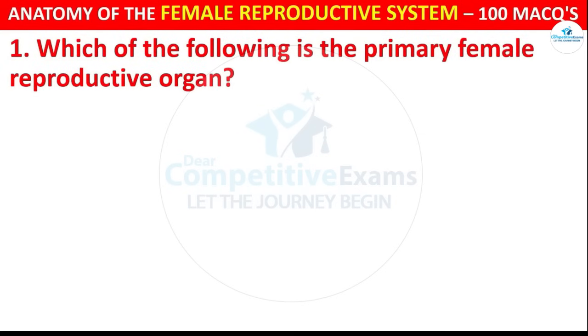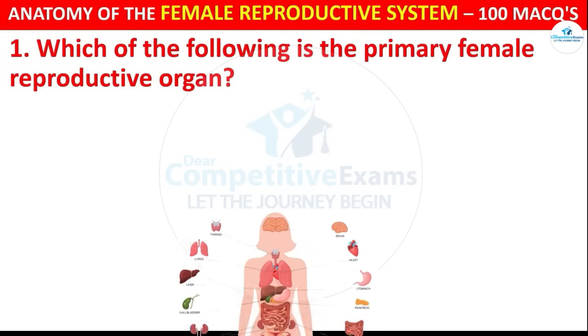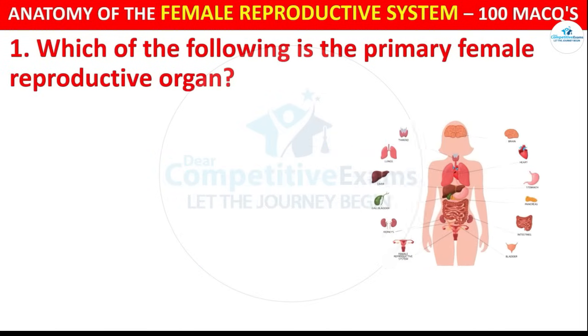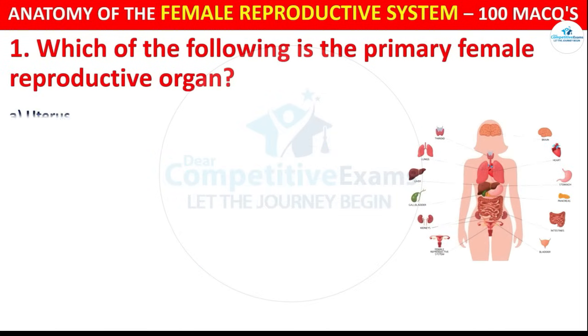Which of the following is the primary female reproductive organ? Options are: Uterus, Ovary,